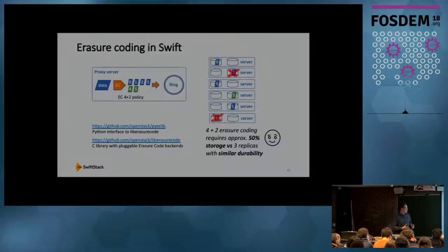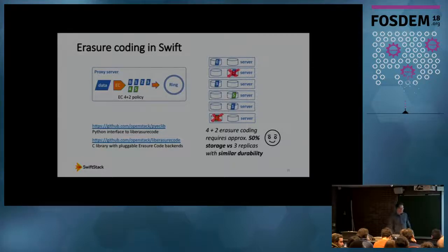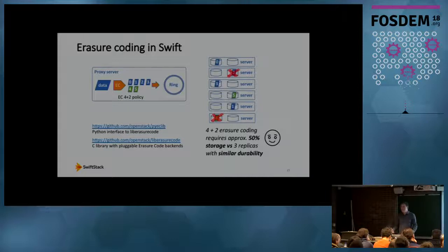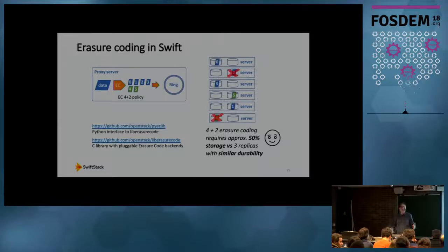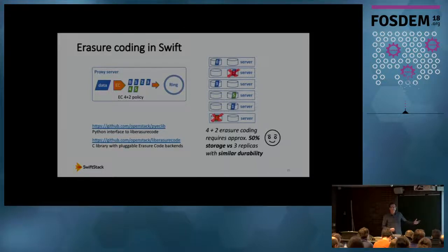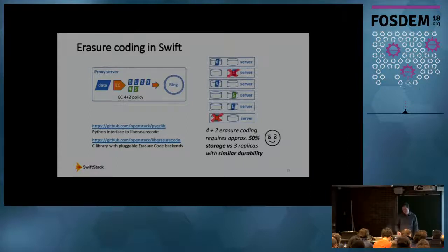In Swift, erasure coding is implemented in the proxy as data enters the cluster. Using a four data plus two parity fragment scheme with open source libraries, the ring behaves exactly as it does for replicas — it is completely unaware it's dealing with erasure code fragments rather than replicas. The ring disperses fragments across the storage pool, one per server on a disk, meaning we can lose two disks and still reconstruct our data. We're using approximately 50% of the storage compared to a three-replica scheme with similar durability.